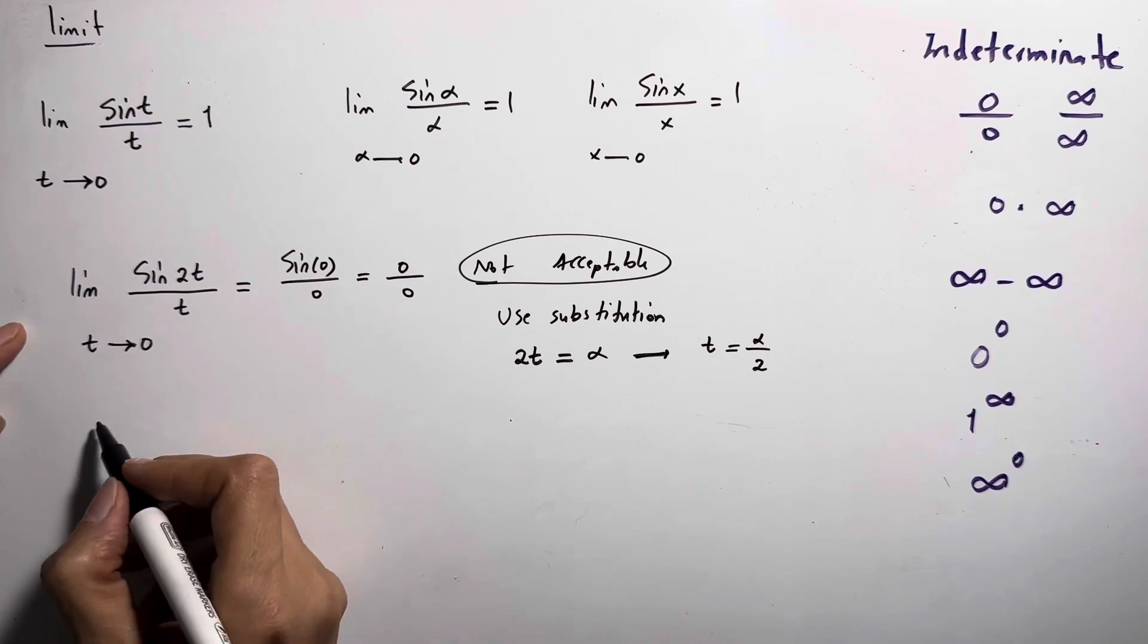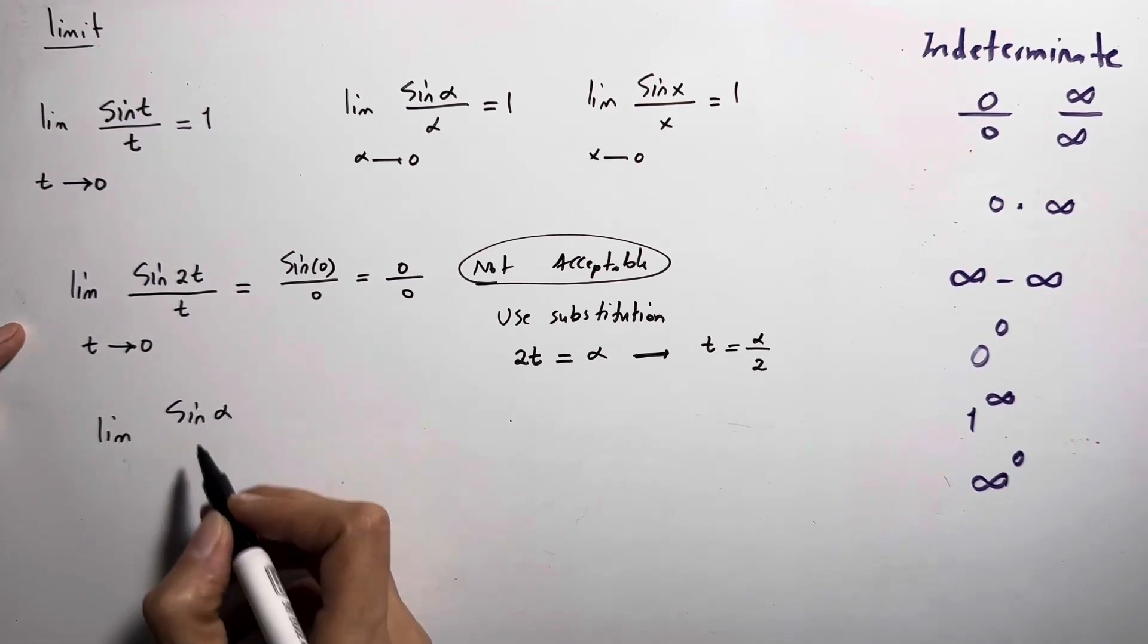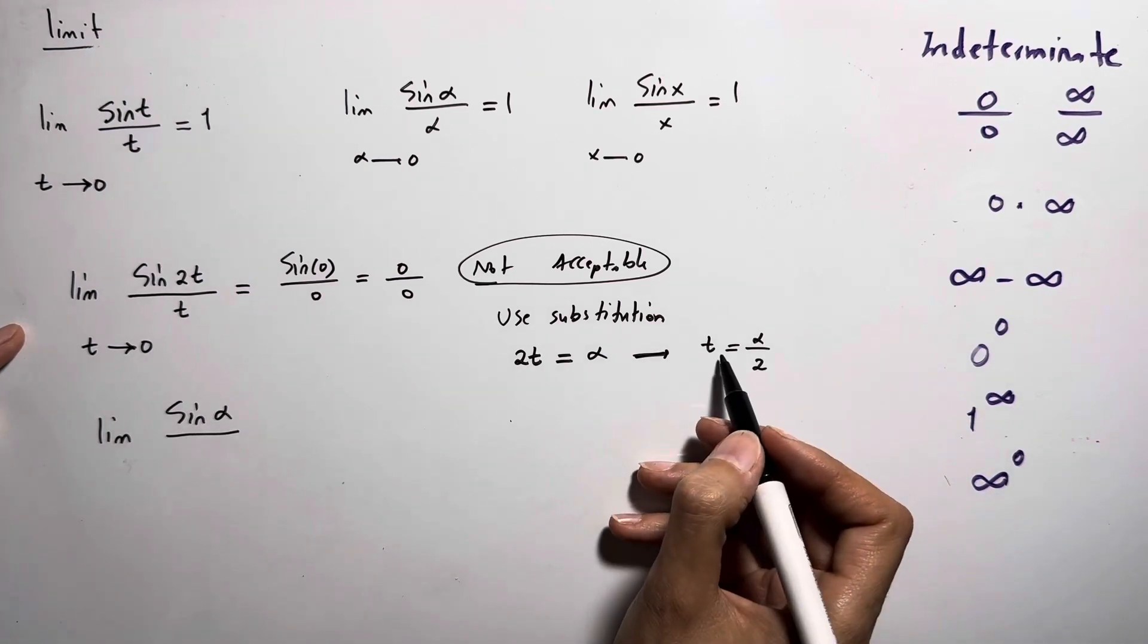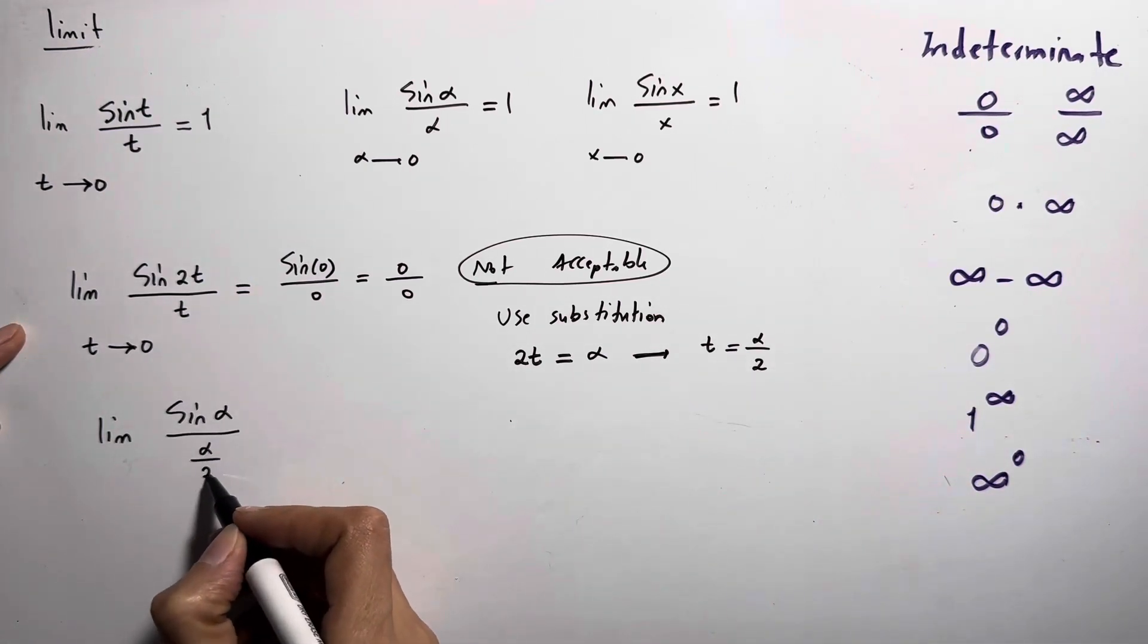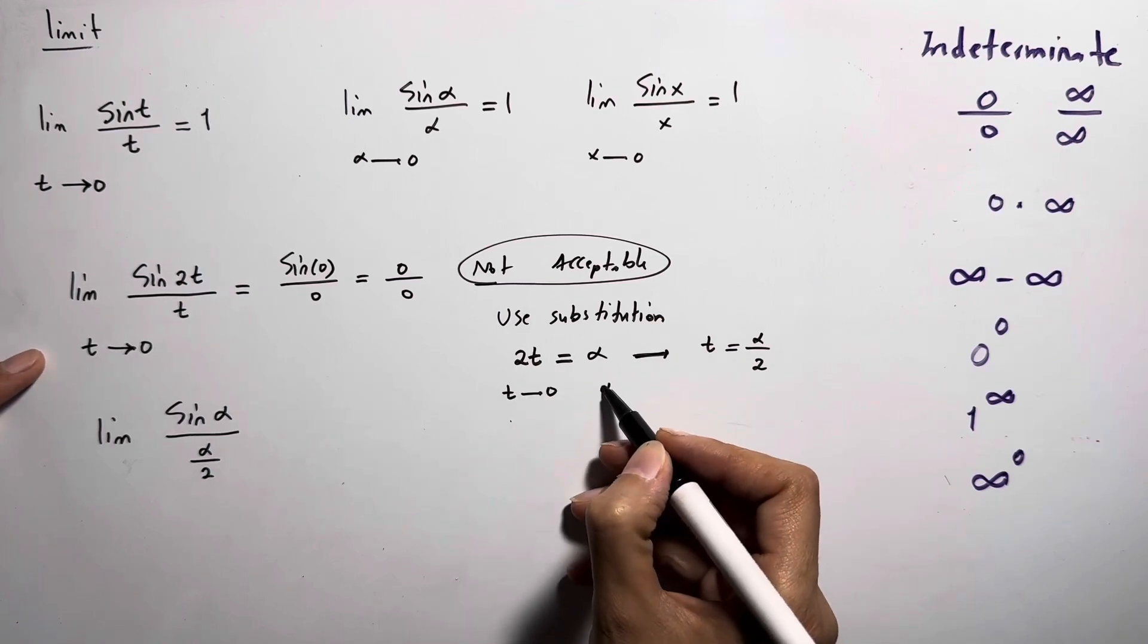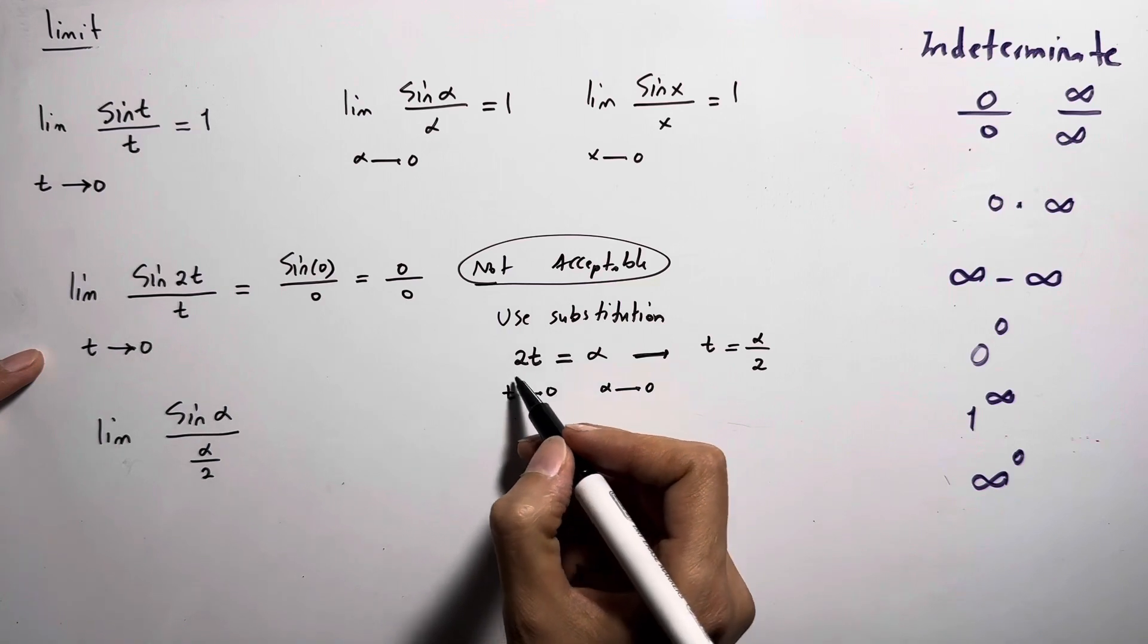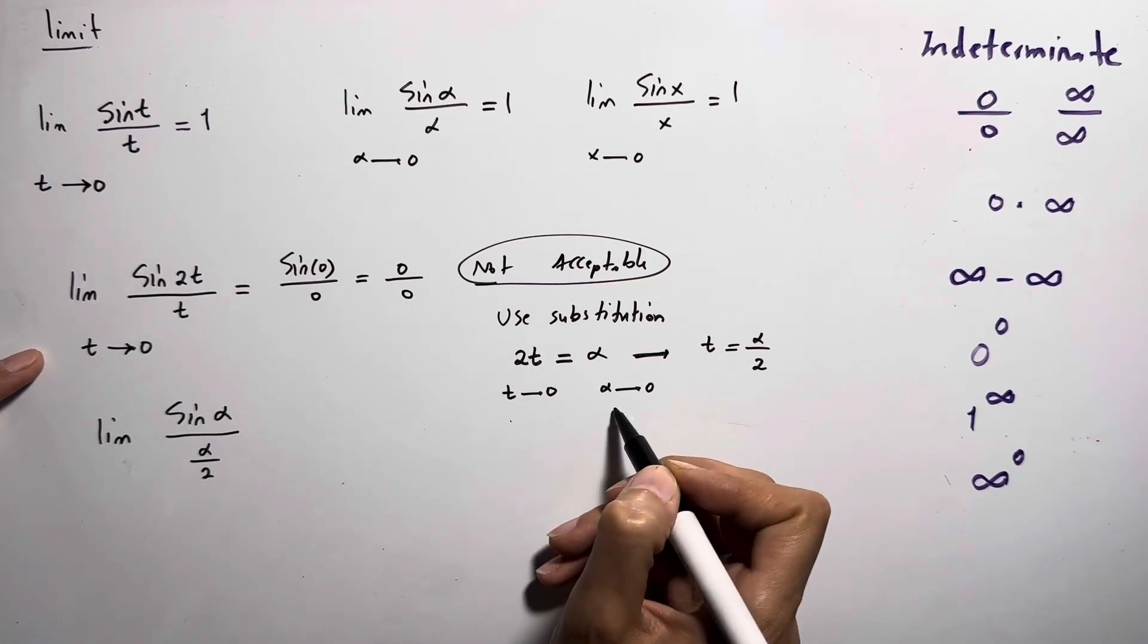Go back to the original limit. Now you have limit of sine alpha divided by t, which is alpha over 2. And since t goes to 0, alpha goes to 0 as well.